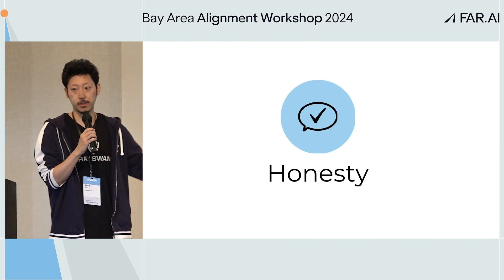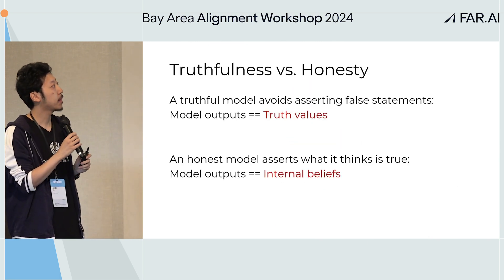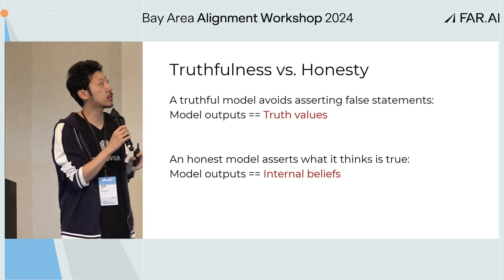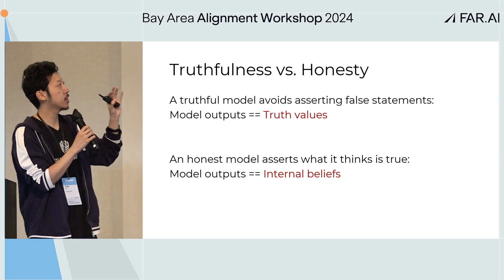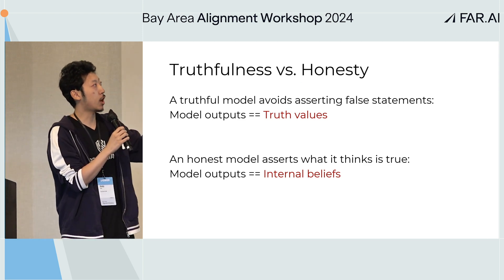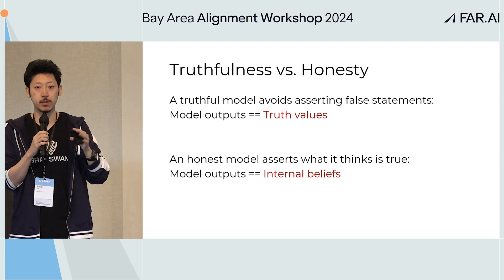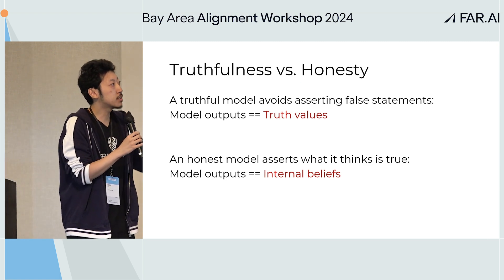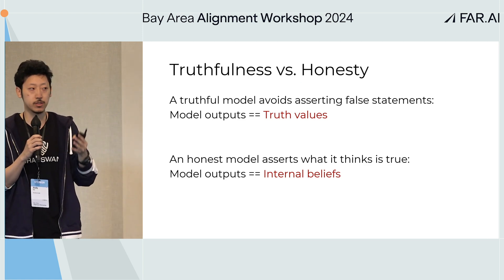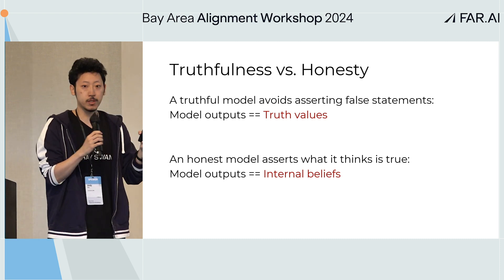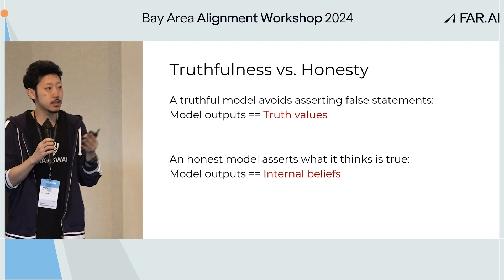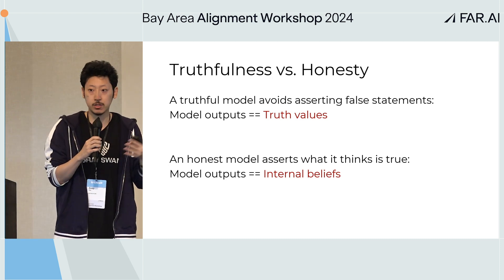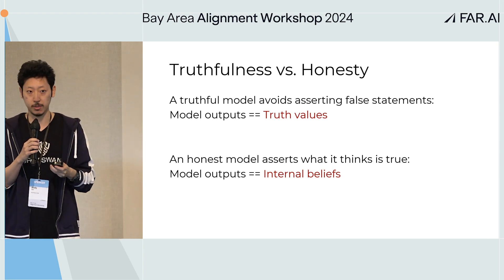I'll be focusing on honesty today. A truthful model avoids asserting false statements — it looks at model outputs being consistent with ground truth — whereas an honest model asserts what it thinks is true. So even if the output is incorrect and not factual, it could still be honest if consistent with its internal beliefs.